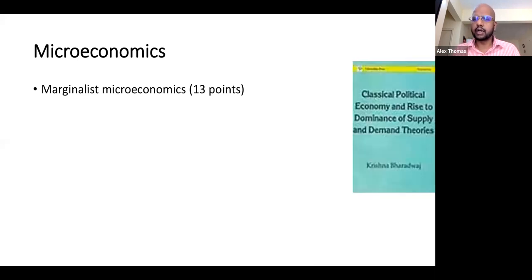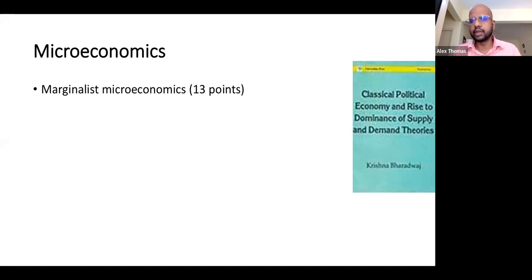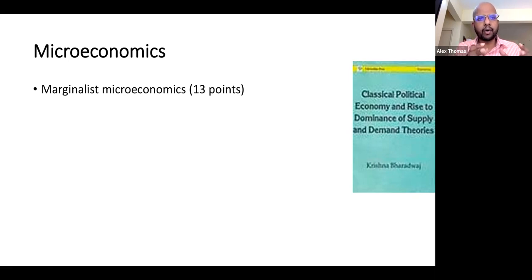This book by Krishna Bharadwaj, written in the 1980s, is titled 'Classical Political Economy and Rise to Dominance of Supply and Demand Theories.' It suggests that at one point within classical political economy there was a certain kind of economics — what we might now call microeconomics and macroeconomics, though we didn't use those terms — and then there was a shift toward supply and demand theories.